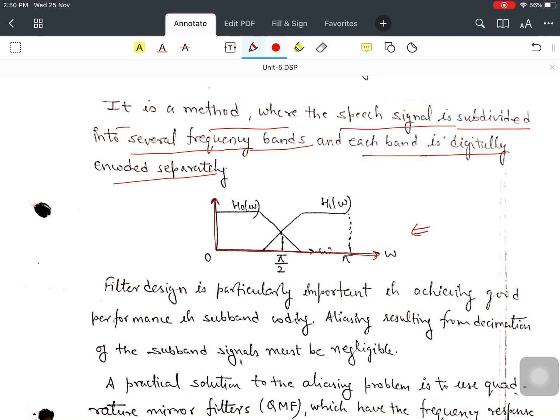According to this figure, you can see this is the response omega, the magnitude. There are two responses: H naught omega and H1 omega. You can see this is the low pass and here is the high pass frequency.